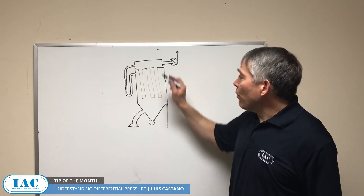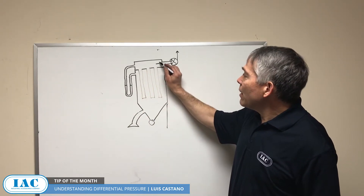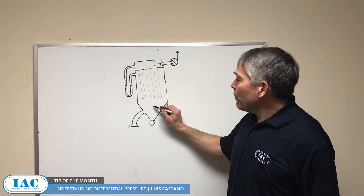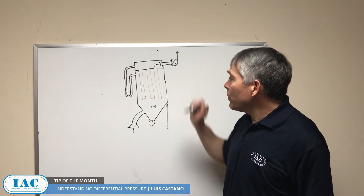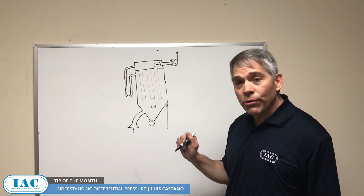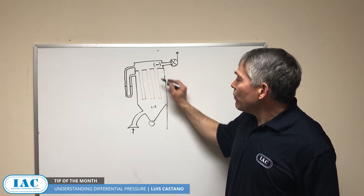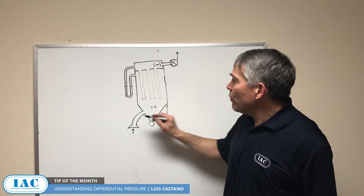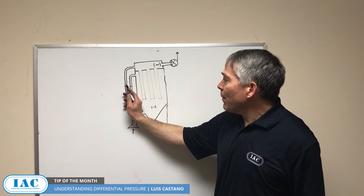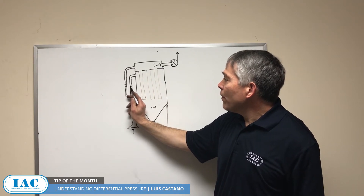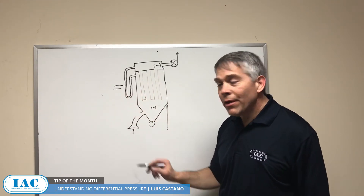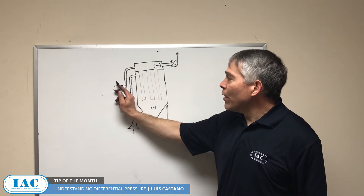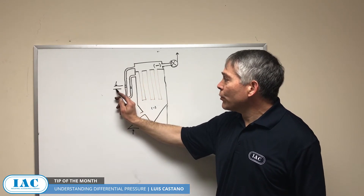When you turn the fan on, you get a negative here. That negative comes this way and that's how the bag house suctions and that's how it functions. You notice that this negative is larger than this one and that makes this water column go up versus this one. So now we have a difference here, and that is what differential pressure is.